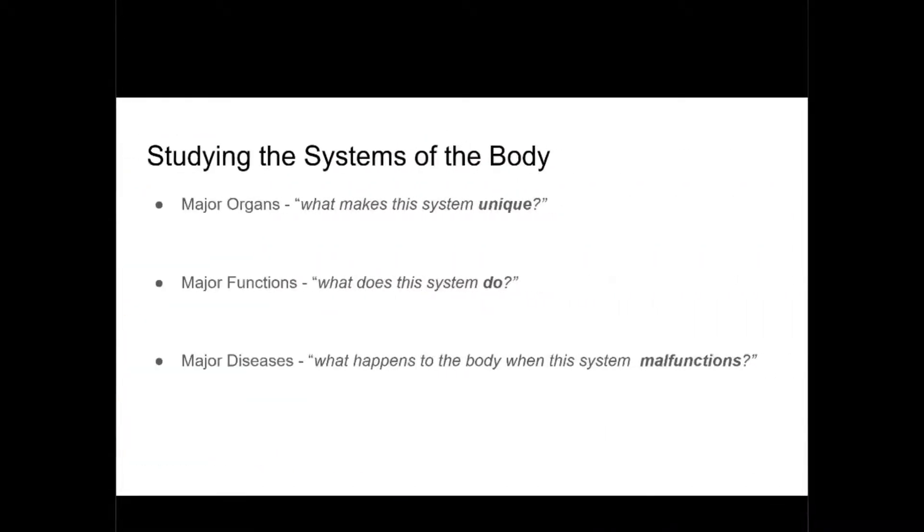Now we're going to go into the systems of the body. But before we do, I recommend that you ask yourself these three questions when you're studying for the TEAS test. What are the major organs of this body? What makes this system unique? Like for instance, the nervous system has the brain, or the cardiovascular system has the heart. You want to ask yourself that if this organ wasn't there, then would this system still be that system?